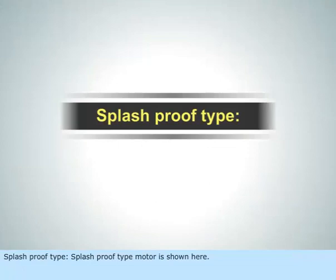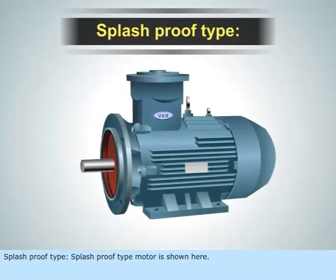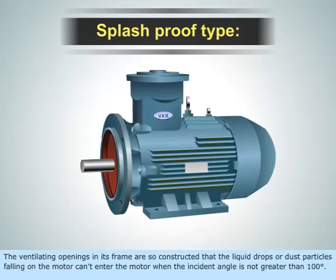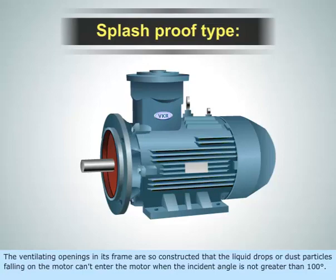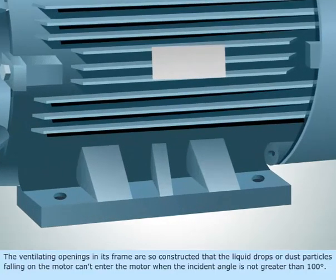Splash proof type motor is shown here. The ventilating openings in this frame are so constructed that liquid drops or dust particles falling on the motor cannot enter the motor when the incident angle is not greater than 100 degrees.